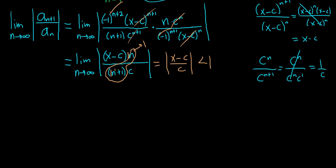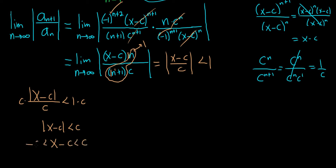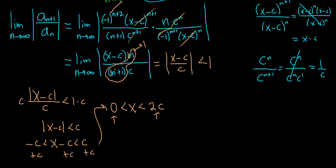Now we can take the absolute value of each piece. Since c is positive, the absolute value of c is just c, so we have the absolute value of x minus c less than c. Multiplying both sides by c gives the absolute value of x minus c less than c. Dropping the absolute value gives negative c less than x minus c less than c. Adding c to each piece gives 0 less than x less than 2c. Now we just have to check the endpoints.